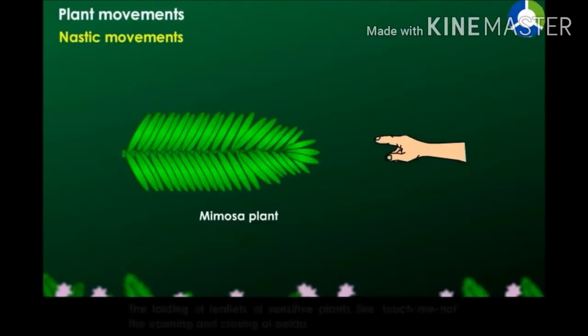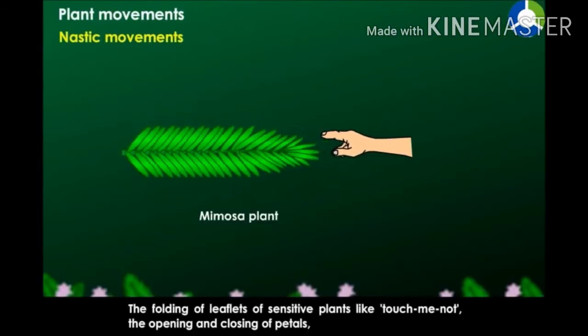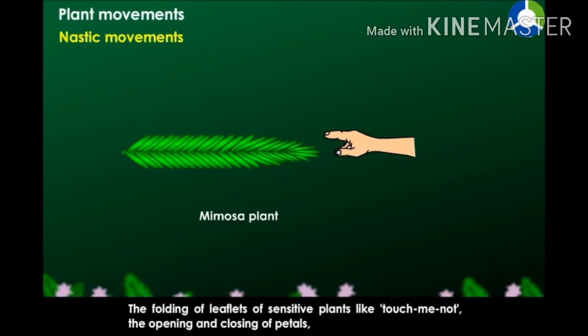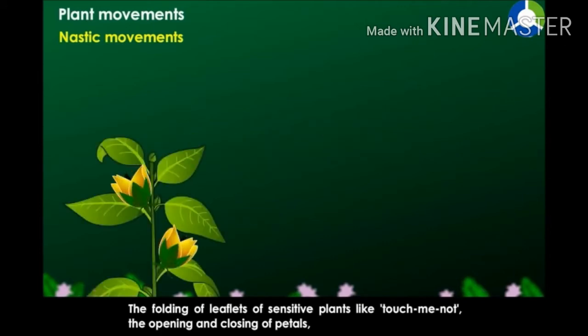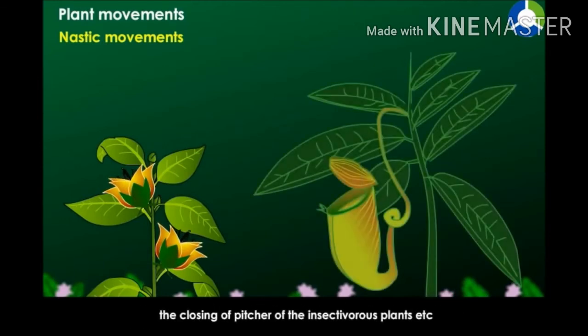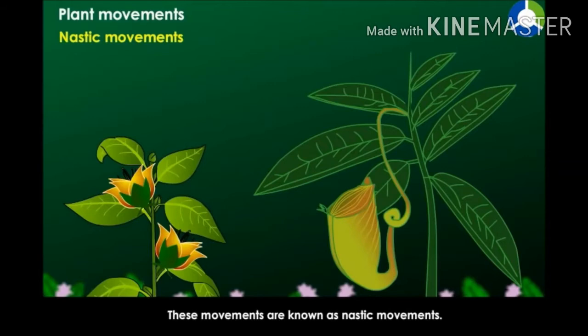The folding of leaflets of sensitive plants like touch-me-not, the opening and closing of petals, and the closing of the pitcher of insectivorous plants are movements that have no relation to the direction of the stimulus. These movements are known as nastic movements.